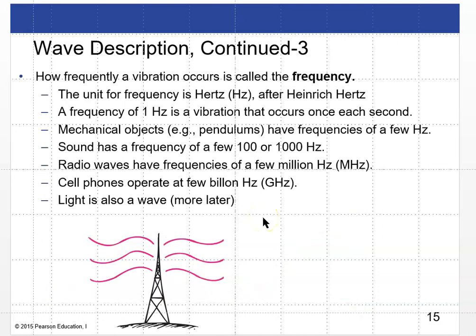How frequently a vibration occurs is called the frequency. The unit for frequency is the hertz (Hz), named after Heinrich Hertz. One hertz is one vibration per second, also known as one cycle per second. Mechanical objects like pendulums have a frequency of about one or two hertz. Human hearing ranges from about 15 Hz to 20,000 Hz. Radio waves have frequencies of a few megahertz; cell phones operate around 2.5 gigahertz. Wi-Fi and microwave ovens are in that same range. Light is also an electromagnetic wave.